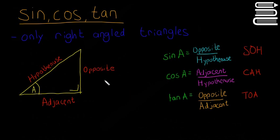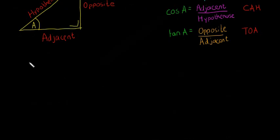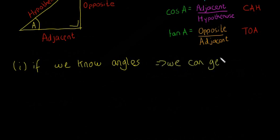Now why are they useful? Two reasons. If we know the angles, we can get sides. If we know angle A, but there's one of these sides we don't know, then we can find the side we don't know.